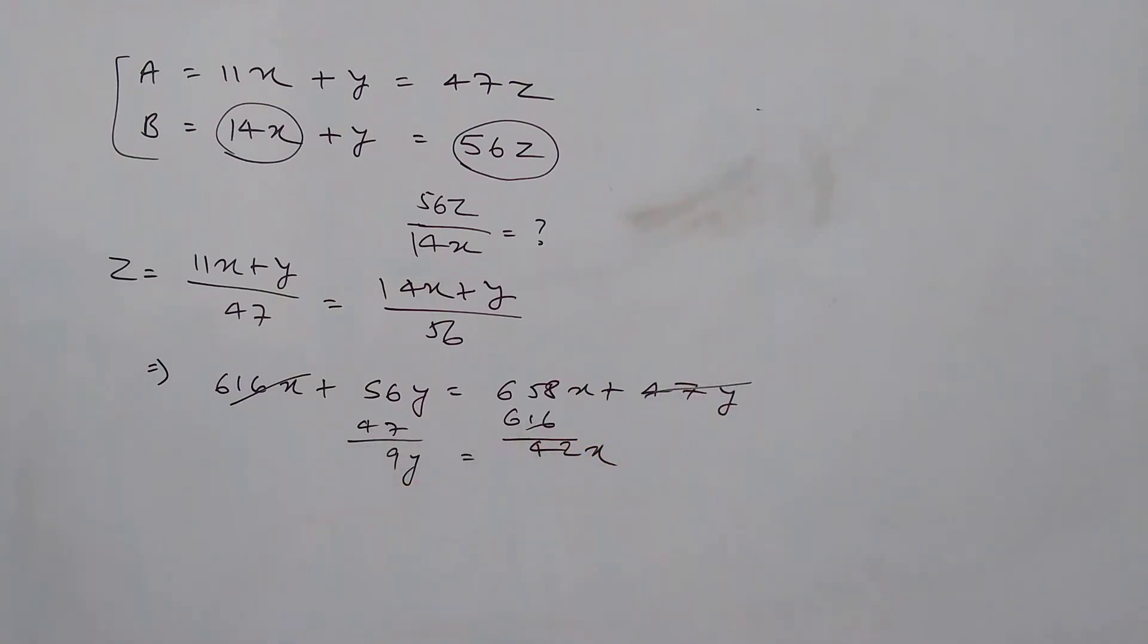So 9y equals to 42x or 3y equals to 14x. So now we know 3y equals to 14x, so to replace z here in this ratio that we need, we can write z in terms of x. So let's see what is z. From here, z is 14x plus y by 56. So this ratio 56z by 14x.